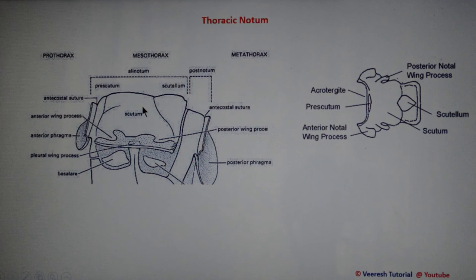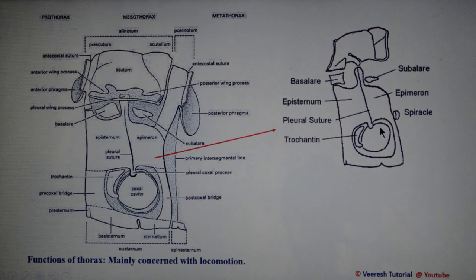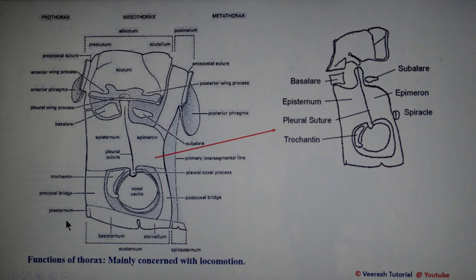The pleural region is divided into the anterior episternum and posterior epimeron. Just below the notal wing processes, there are two sclerites — the basalar and subalar sclerites — which help in attachment of the wings at the pleural region. This is the coxal cavity. The ventral side is differentiated into the anterior eusternum and posterior spinasternum. The eusternum is further differentiated into the presternum, basisternum, and sternellum. The main function of the thorax is locomotion.